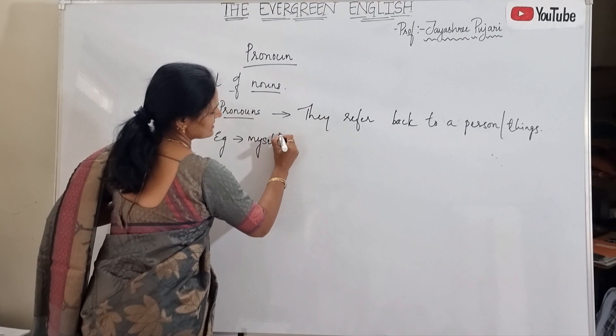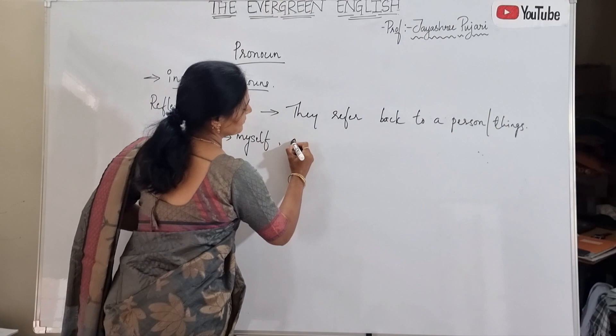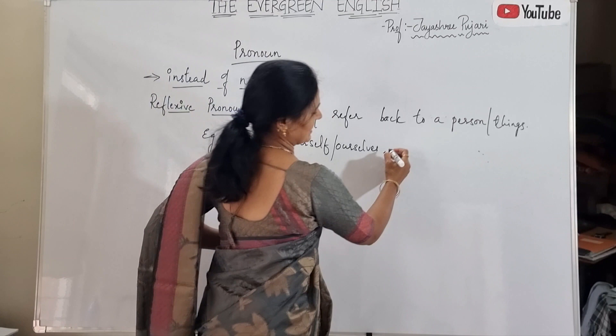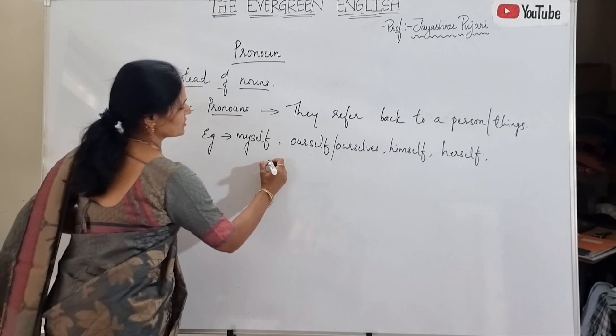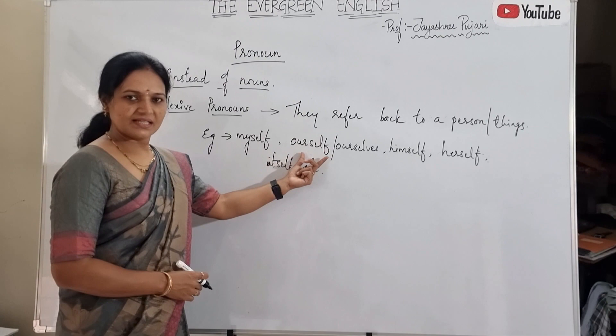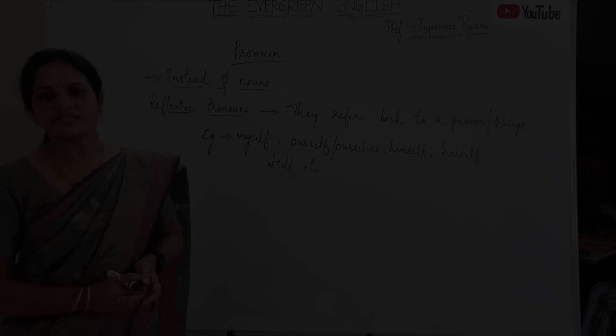Examples of reflexive pronouns are: myself, ourself or ourselves (plural), himself, herself, itself, themself or themselves, and so on. Whether singular or plural depends on the sentence you are framing. Let us now look at some examples of reflexive pronouns.